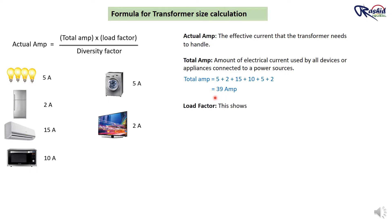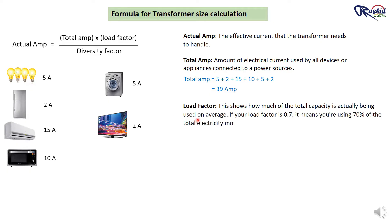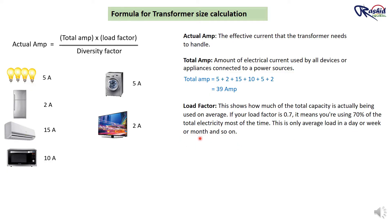Next is Load Factor. This shows how much of the total capacity is actually being used on average. If your load factor is 0.7, it means you are using 70% of the total electricity most of the time. This is the average load over a day, week, month, and so on.